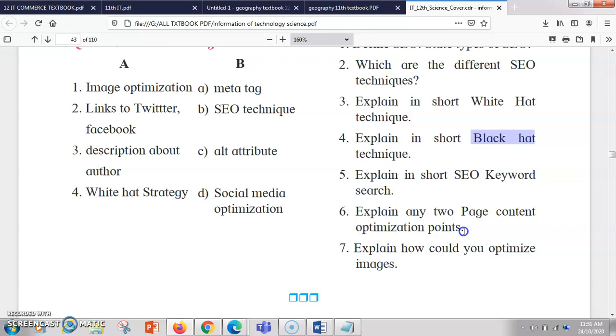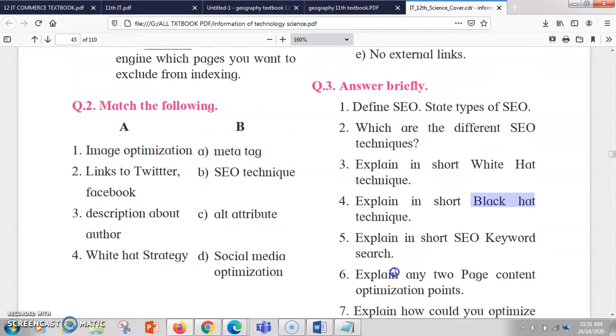And last is how can you optimize the image. So basically images can be optimized with the help of other things like name, then alt attribute. So all these things are playing an important role in it. So these are the answers in briefly.